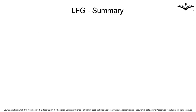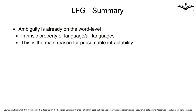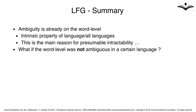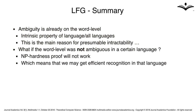Let us summarize what we have found for the LFG case. First, ambiguity is already on the word level and it seems to be an intrinsic property of language. This is the main reason for presumable intractability. But what if the word level was not ambiguous in a certain language? Then the NP-hardness proof would not work, meaning we may get efficient recognition in that language.